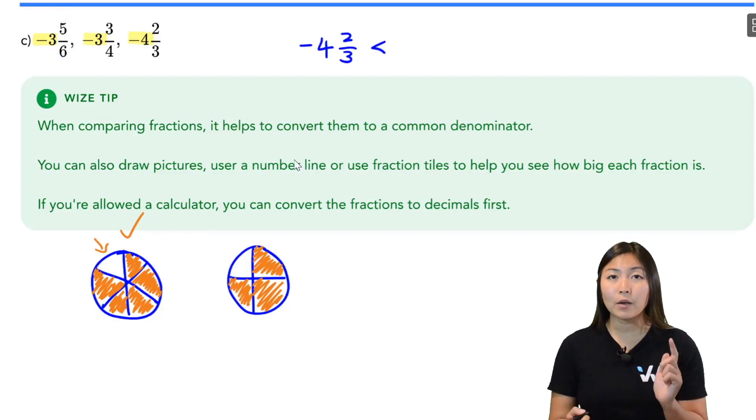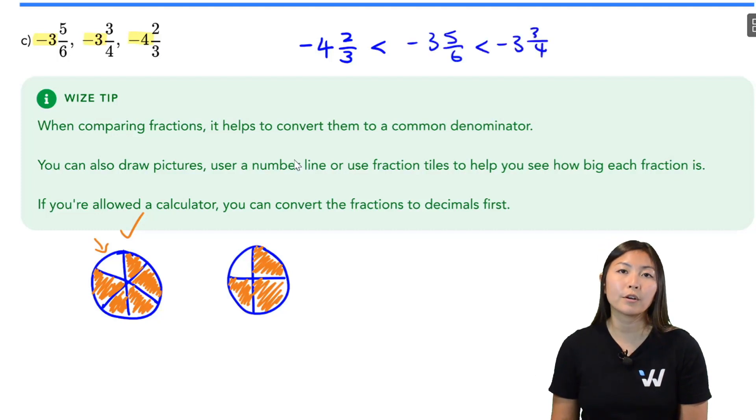But since these are negative, it works the opposite. So negative 3 and 5 sixths is smaller than negative 3 and 3 fourths. And this, my friend, is the order of these three numbers.